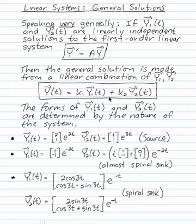Say k1 y1 plus k2 y2, any number of copies of y1 plus any number of copies of y2. Now the form of y1 and y2 are determined by the nature of the system.